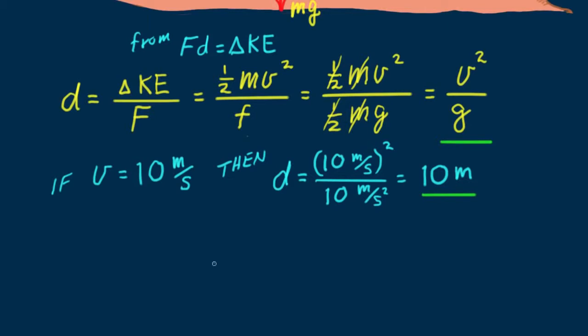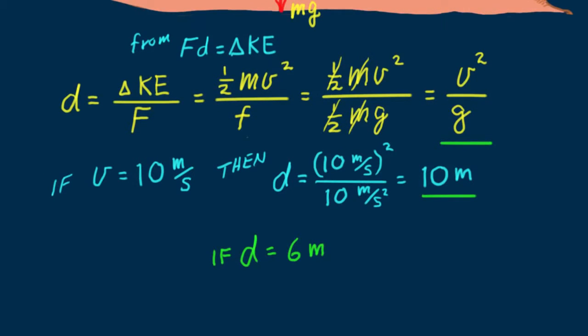I want to leave you with a question. If the missing road surface were 6 meters in front of Nellie instead of 10 plus meters, what's the maximum speed she can have to stop safely? In other words, V equals what?